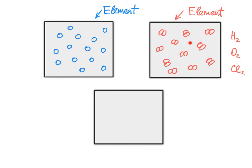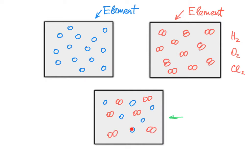In this box you can see atoms of different kinds — the elemental atoms of the diatomic elements connected together. They are not reacting with the other type of element; they are just occupying the same space. So inside of this box I have a mixture of elements.